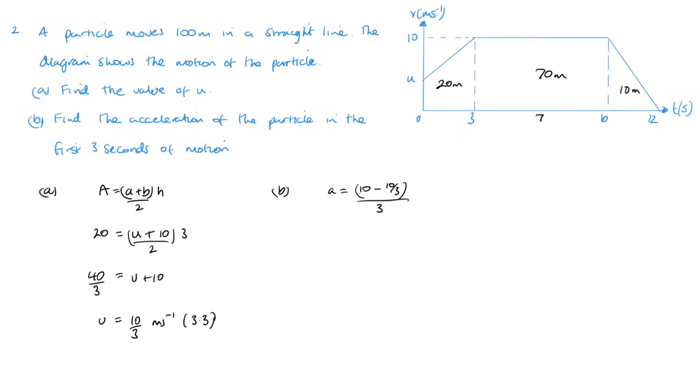So that's just 3. So 10 minus 10 over 3 divided by 3 gives me 20 over 9, or 2.2 recurring, and that is the acceleration of the particle. Nice and easy.